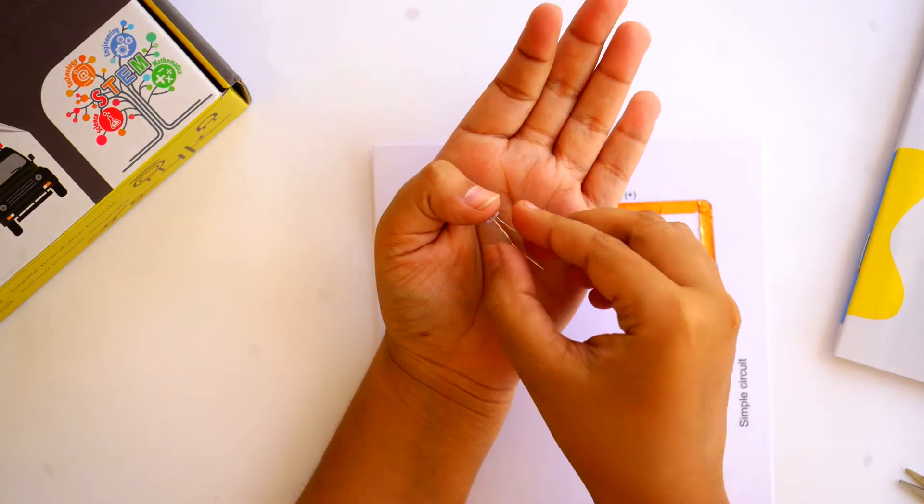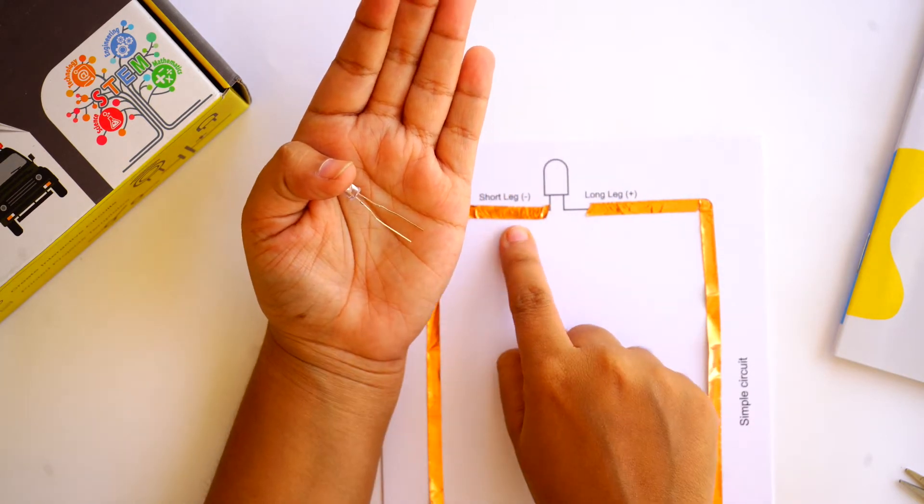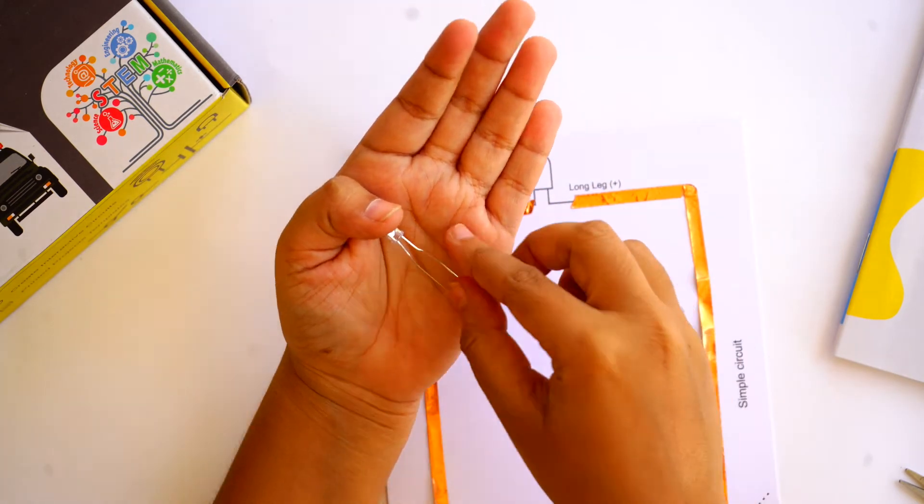Make sure that the long leg of the LED is secured to the positive side of the circuit, because this is easy to mix up.